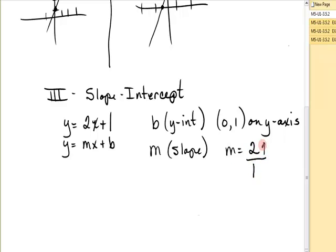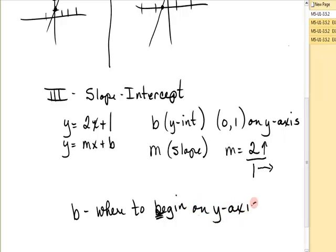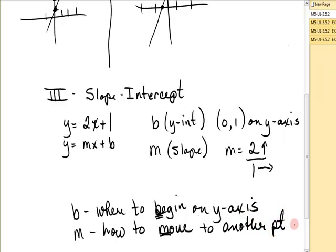Remind yourself that slope is vertical over horizontal. Positive 2 means I will go up 2. Horizontal positive 1 means I will go right 1. Here's something that might be helpful. Let b tell you where to begin on the y-axis. Let m tell you how to move to another point. b for begin on the y-axis, m for move.